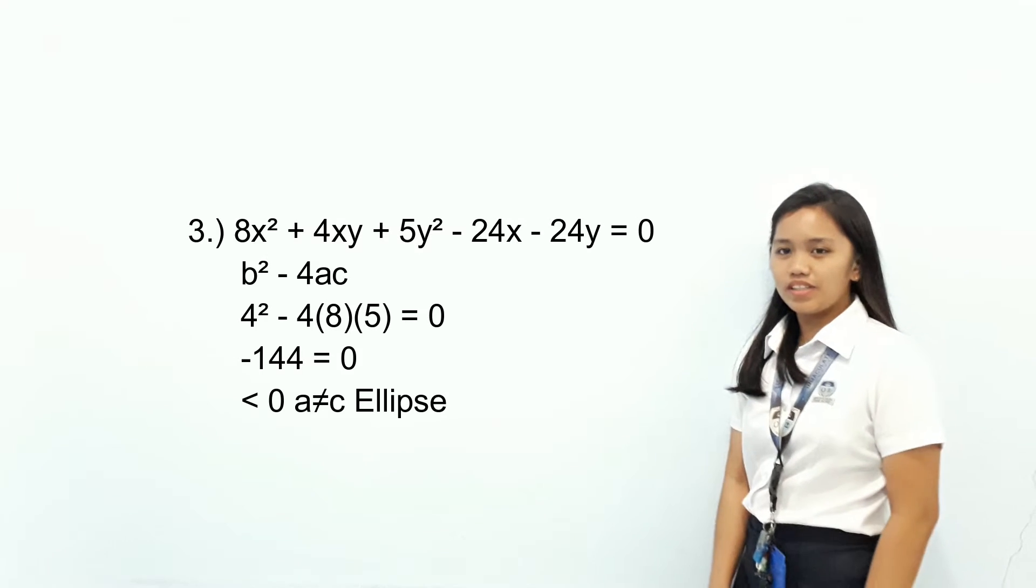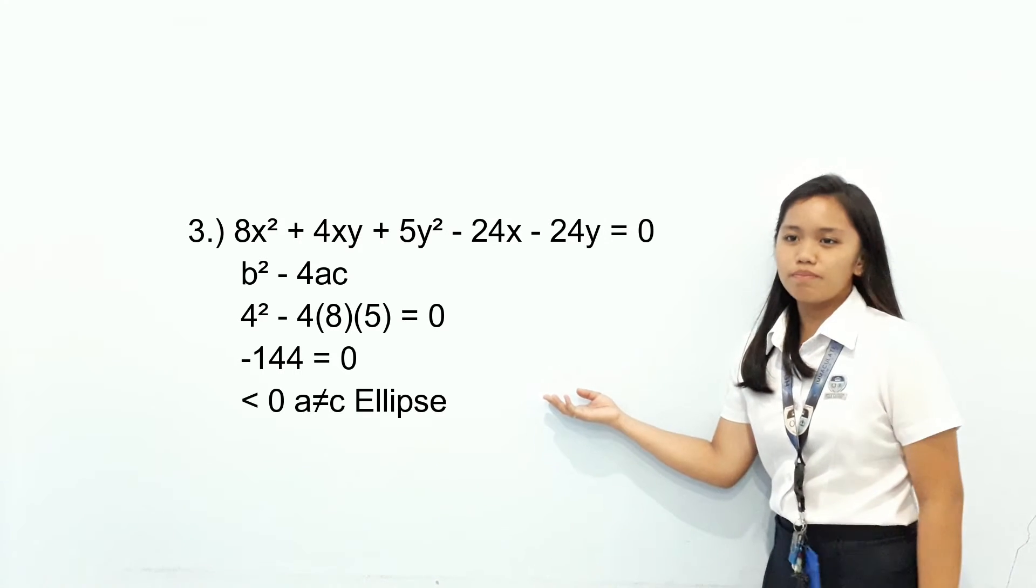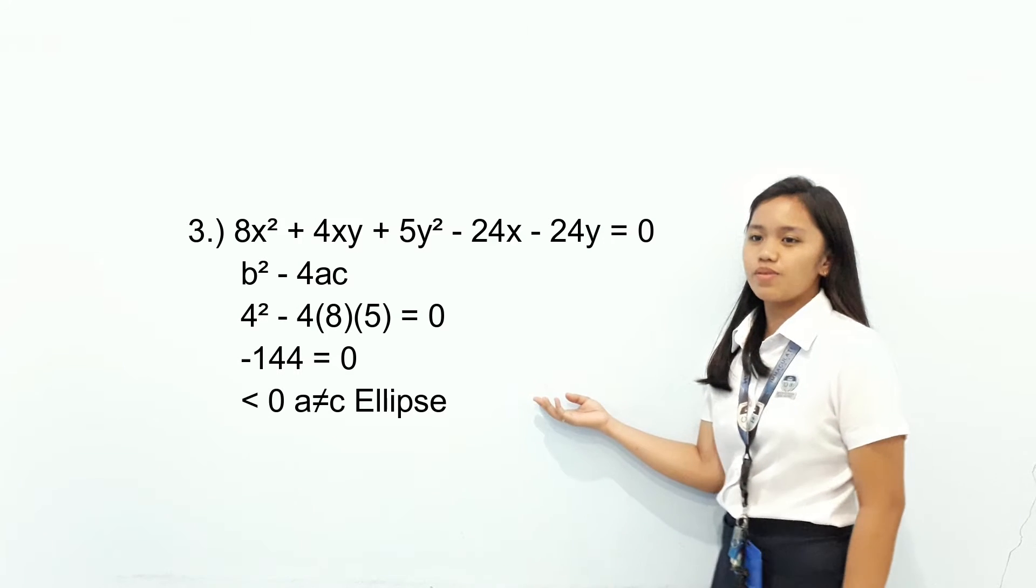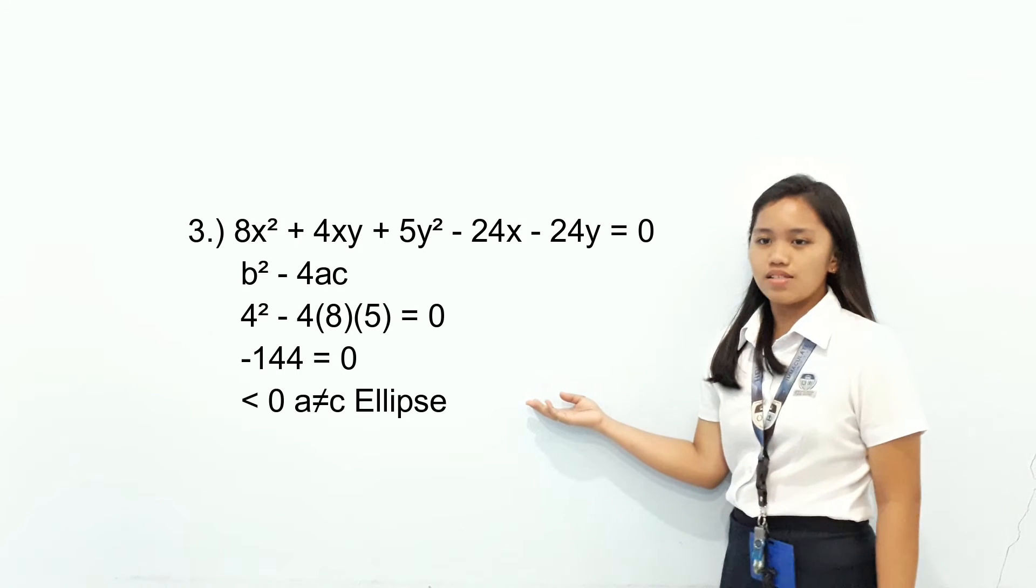Example number three: 8x² + 4xy + 5y² - 24x - 24y = 0. B² - 4AC: